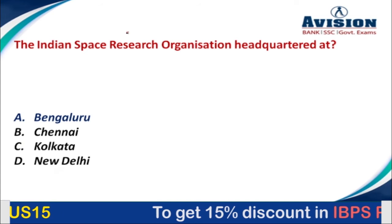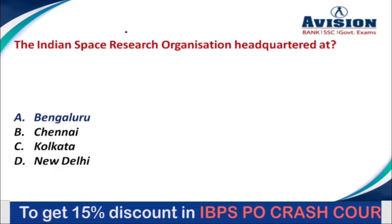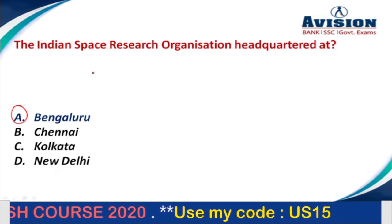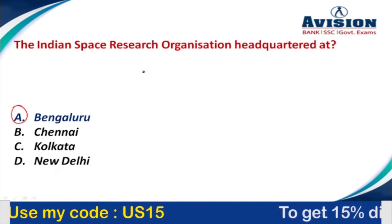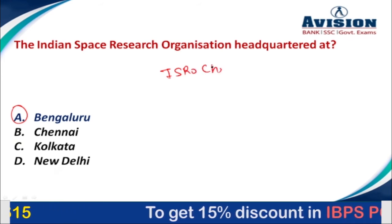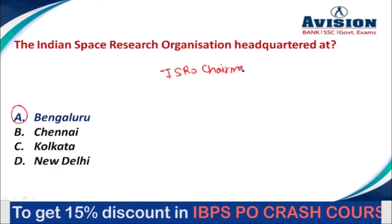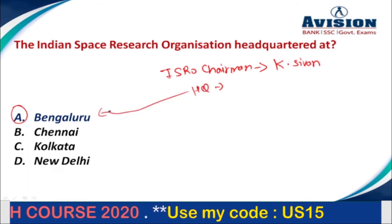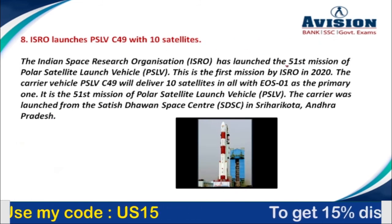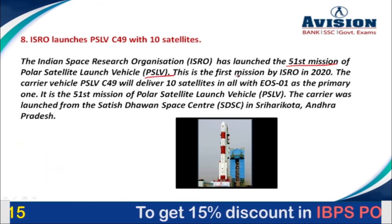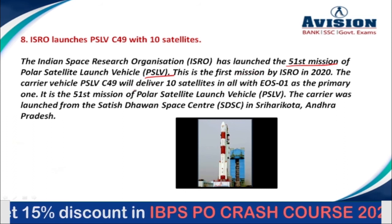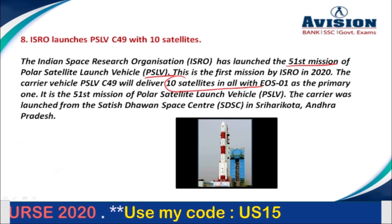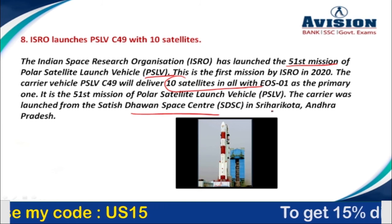Question number 8: The Indian Space Research Organisation is headquartered at which city? Options are Bengaluru, Chennai, Kolkata, or New Delhi. The correct option is option A, that is Bengaluru. ISRO has launched the 51st mission of the Polar Satellite Launch Vehicle. This is the first ISRO mission in 2020, and the carrier vehicle PSLV-C49 will deliver 10 satellites in all. The launch was carried out from the Satish Dhawan Space Centre in Shriharikota, Andhra Pradesh.